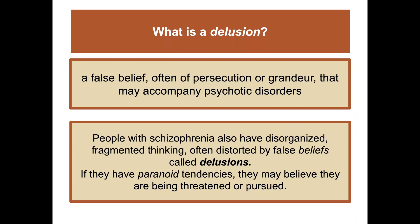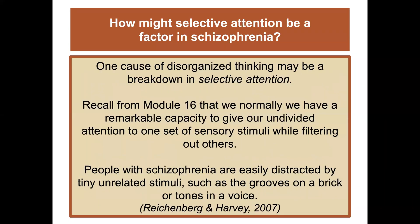A delusion is a false belief — often of persecution or grandeur — that may accompany psychotic disorders. People with schizophrenia also have disorganized, fragmented thinking, often distorted by delusions. If they have paranoid tendencies, they may believe they're being threatened or pursued. One cause of disorganized thinking may be a breakdown in selective attention. We normally have a remarkable capacity to give undivided attention to one set of sensory stimuli while filtering out others, but people with schizophrenia are easily distracted by tiny, unrelated stimuli such as the grooves on a brick or tones in a voice.